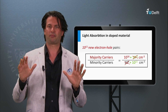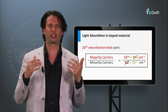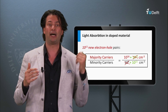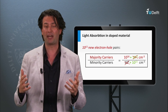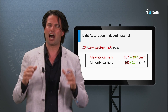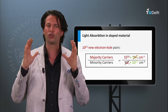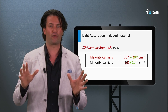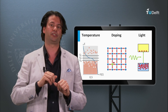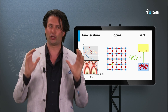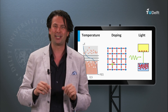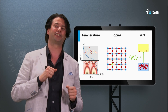Summarized, in this block we have discussed how to excite charge carriers in a semiconductor material by temperature, doping, and light absorption. The next question is how do those charge carriers move around and what makes them move around in a semiconductor material? I will talk about that in the next block, where we are going to discuss transport of charge carriers.